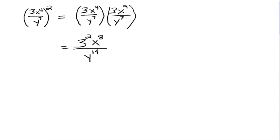You have x to the 4th — all that raised to the 2nd power gives you 4 times 2, which gives you 8. That's where the x to the 8th comes from. And then the denominator of y to the 7th raised to the 2nd power: 7 times 2 is 14. That's where the y to the 14th comes from.